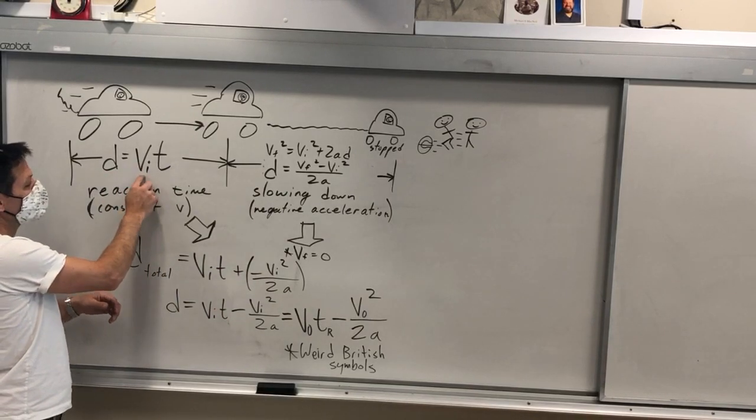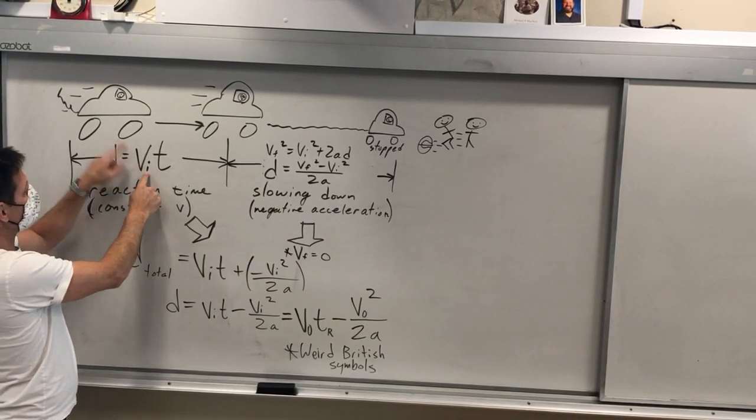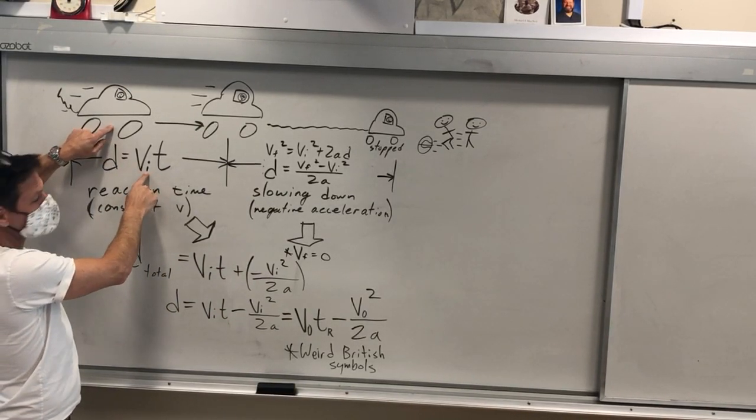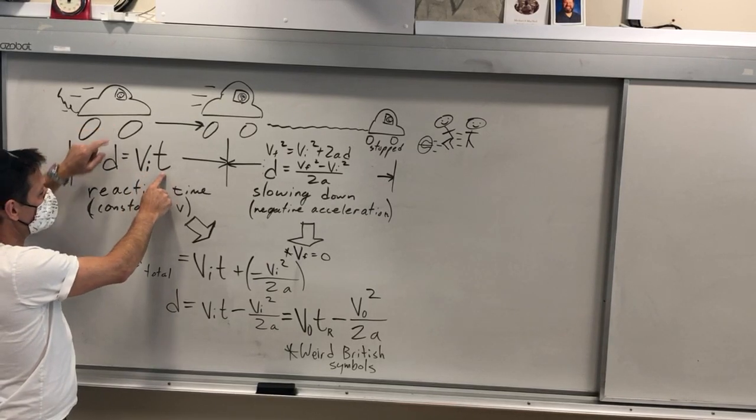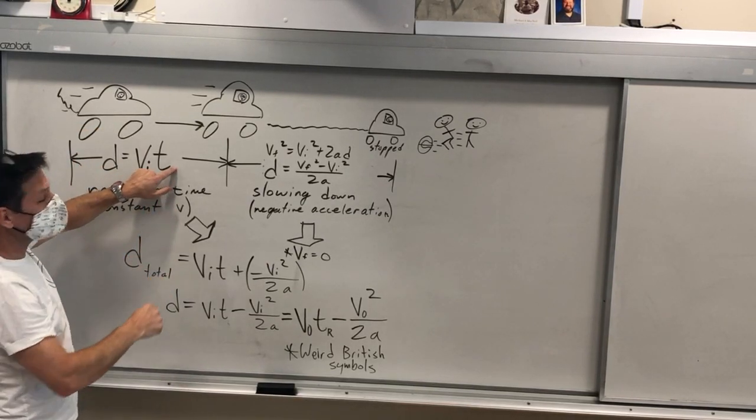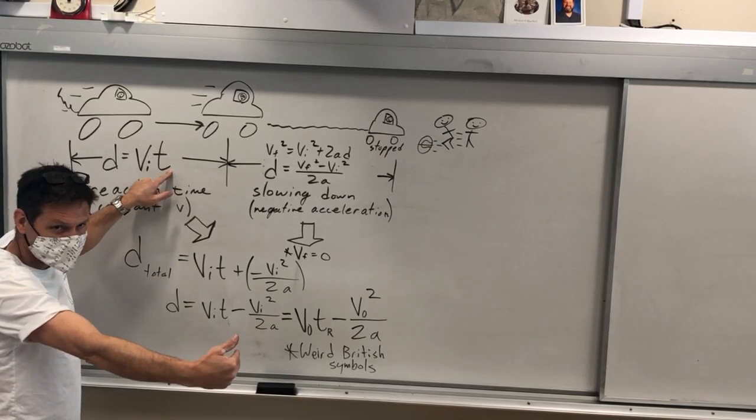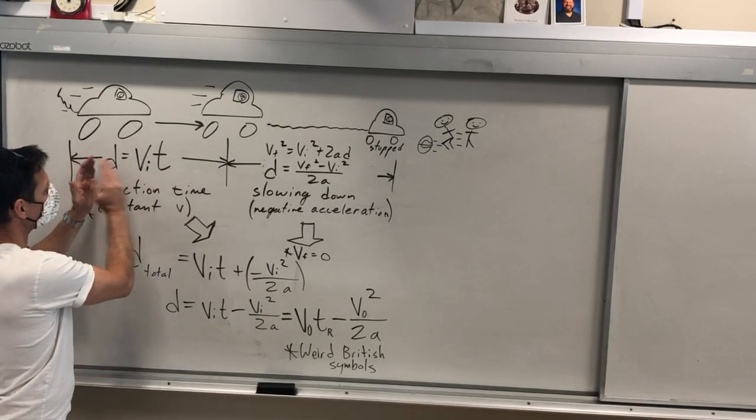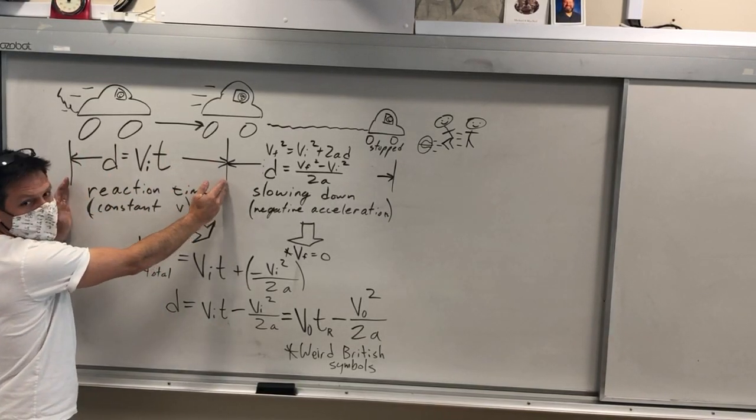So at a constant velocity, it's just V, and this is like your initial velocity because it stays the same, times the time. They said TR, that just means the time for your reaction. So that distance comes in first.